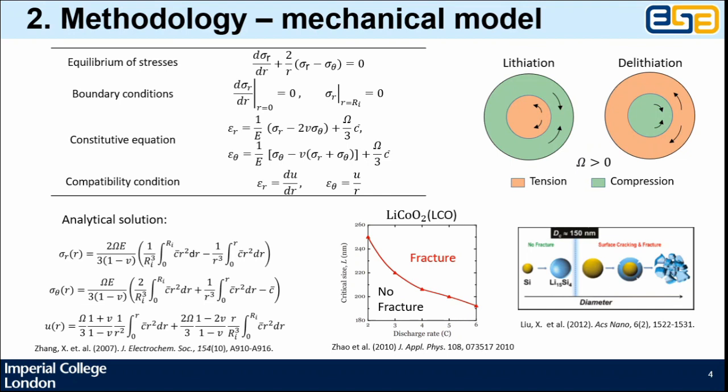The solution also shows there are two different stress states within one electrode particle. For lithiation, the outer layer is under compression, while the center is under tension. For delithiation, it's a reverse of lithiation.